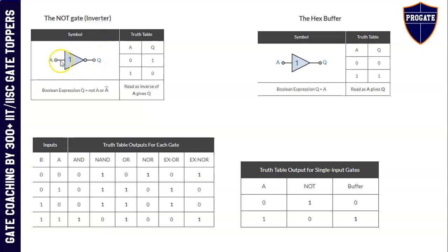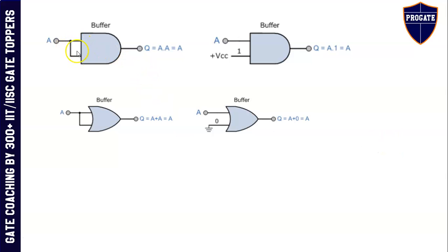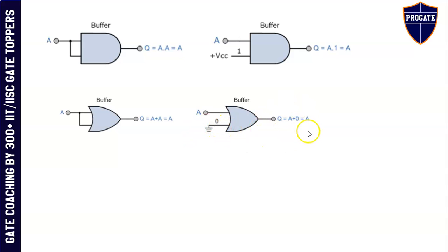NOT gate: whatever logic you give as input, the inverted value appears at the output. Buffer: the same value appears at the output. This is the truth table of all the gates at one place. AND gate: if you tie both inputs together, it acts as a buffer; or if you connect one of the inputs to VCC, it also acts as a buffer. Similarly, OR gate acts as a buffer if you connect both inputs to a single input, or if you connect one of the inputs to ground.